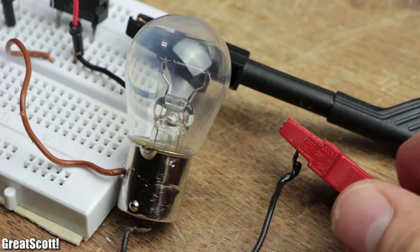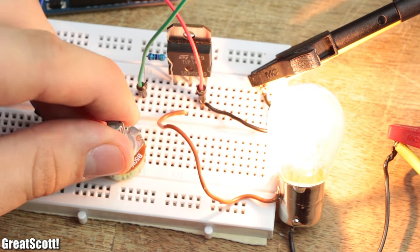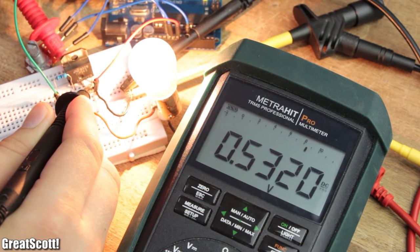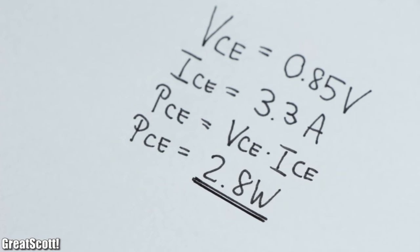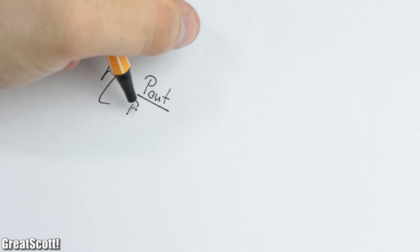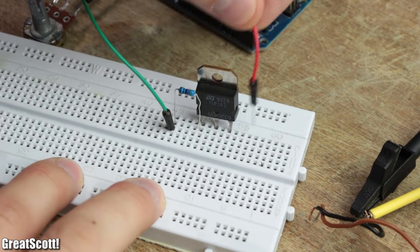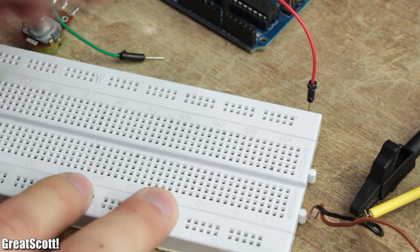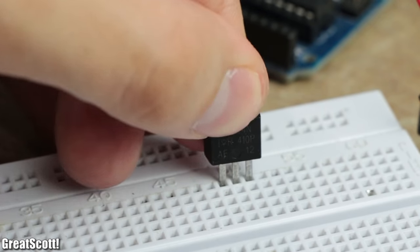But as soon as I tried to control a bigger load, the transistor started to heat up quite a bit, which is mainly due to the energy loss of the collector-emitter path. This means our circuit's efficiency can still be improved, and for that there luckily exists another popular and more suitable transistor type: the so-called MOSFETs.